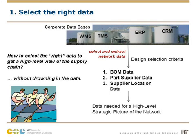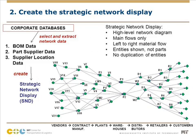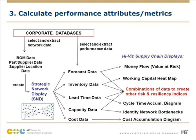Let's look at the first one. What we really want is to be able to extract bill of materials, parts supplier, and supplier location data from corporate databases, then convert that information into a strategic network display — a left-to-right material flow that only shows the main flows with no duplication of entities. Once I have that baseline, I can extract performance data such as forecast, inventory, lead time, capacity, or cost data, and show some pretty interesting metrics to senior management.